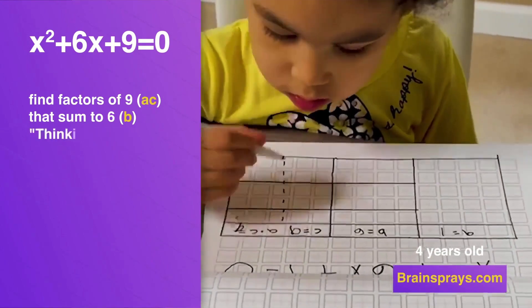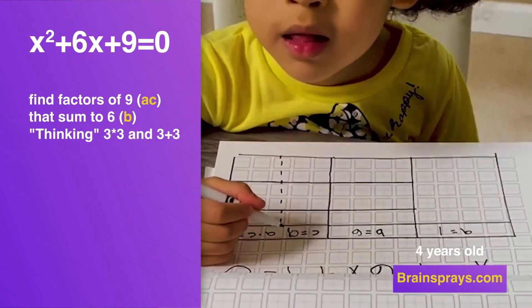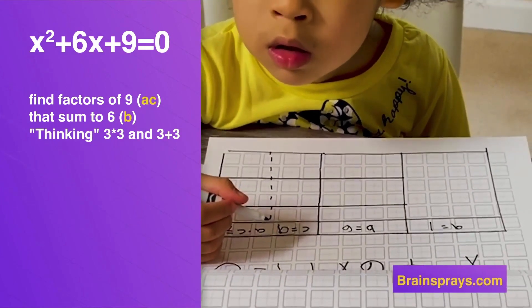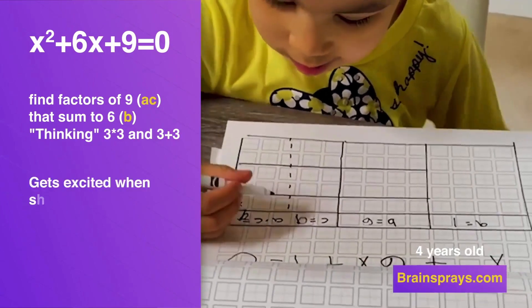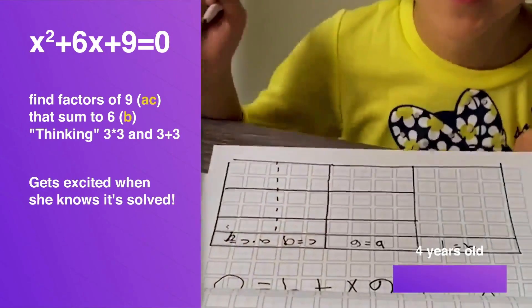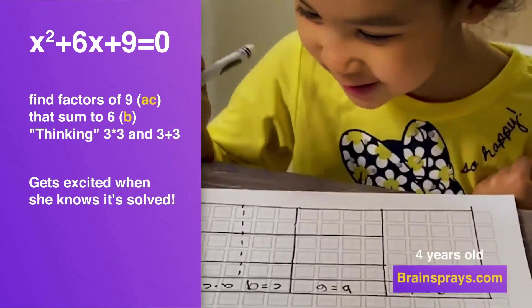3 plus 3. 3 times what equals 9? 3. Write that down. This is actually going to work. Okay. Go ahead. See. Give it a shot. See if it works.